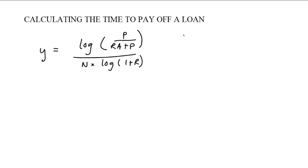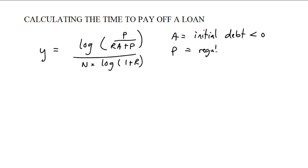Just as before, a is the initial debt — and this is a negative number. That's important. The formula will not work if you put in a positive number. p is the regular payments, and these are going to be positive numbers. You are trying to pay off a negative amount of money by making positive payments.